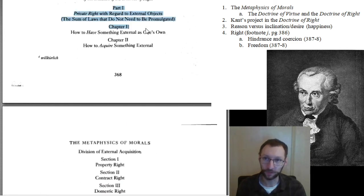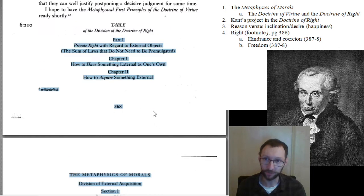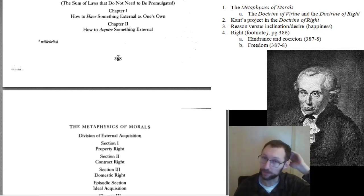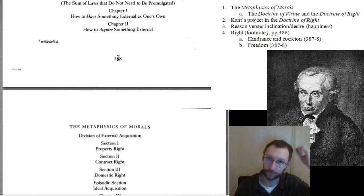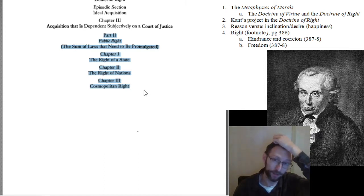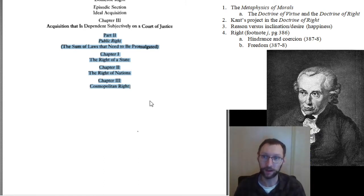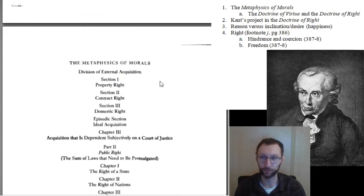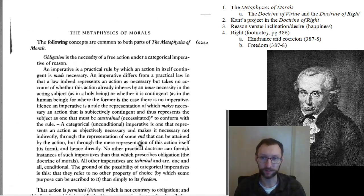For the first part of the course, we're mostly going to be looking at part one, and we'll spend a lot of time there. Part one matches up to section two of the essay 'On the Common Saying: That May Be Useful in Theory, But Not in Practice,' which we've already read. Eventually we'll read part two of the Doctrine of Right, which matches up to part three of that essay. This stuff deals with relations between states, while part one deals with stuff within states and the founding of states.